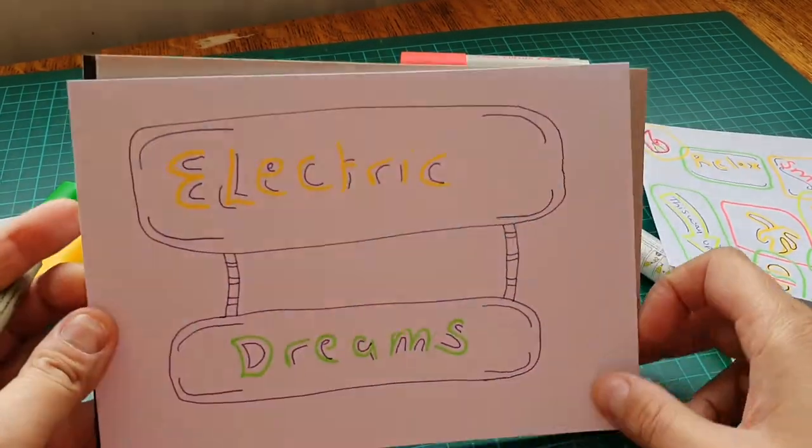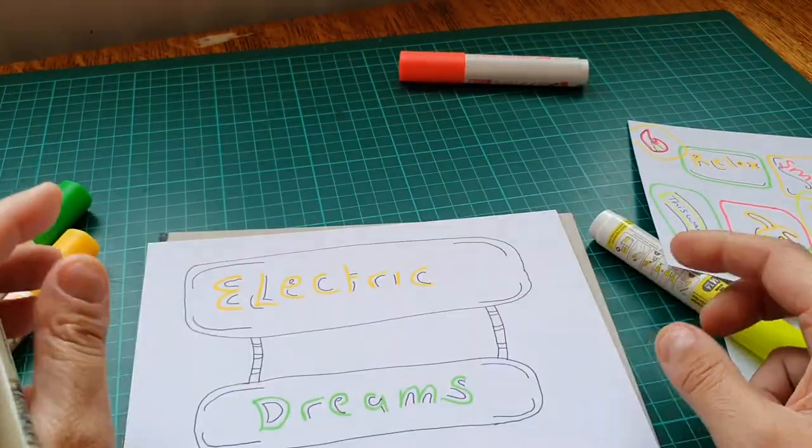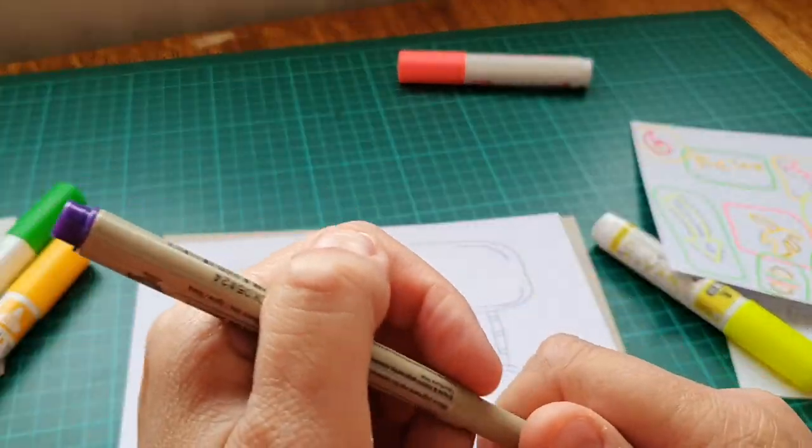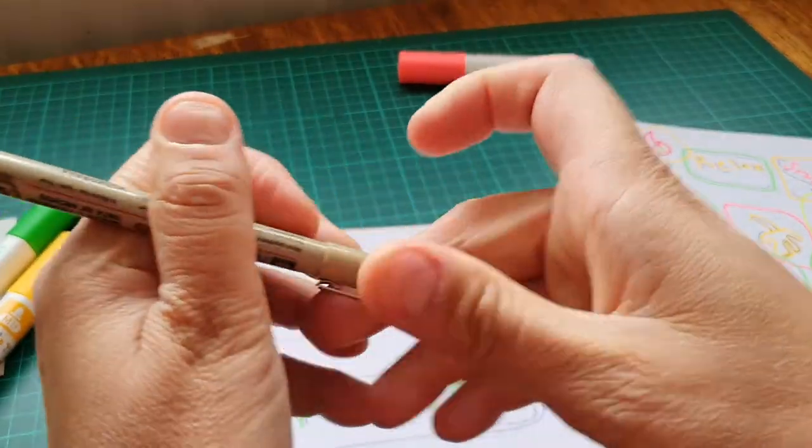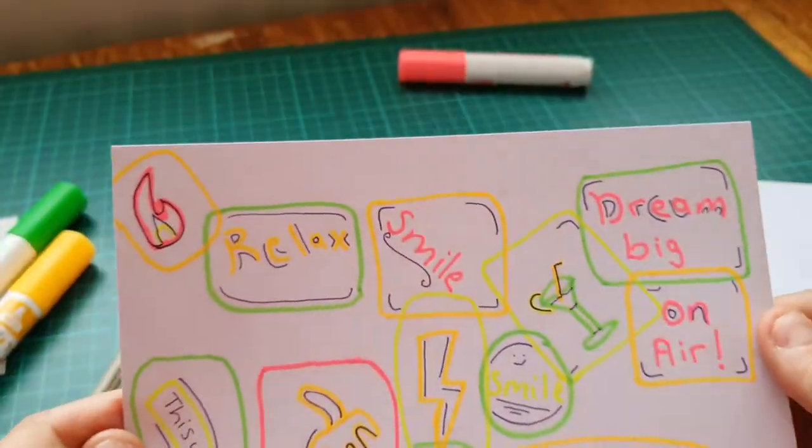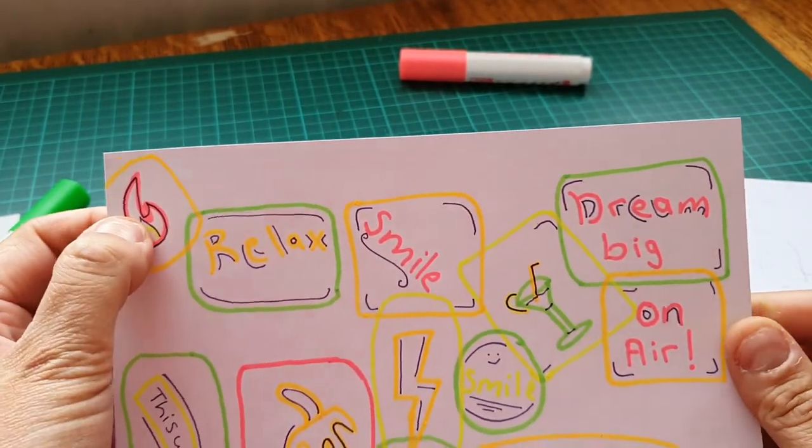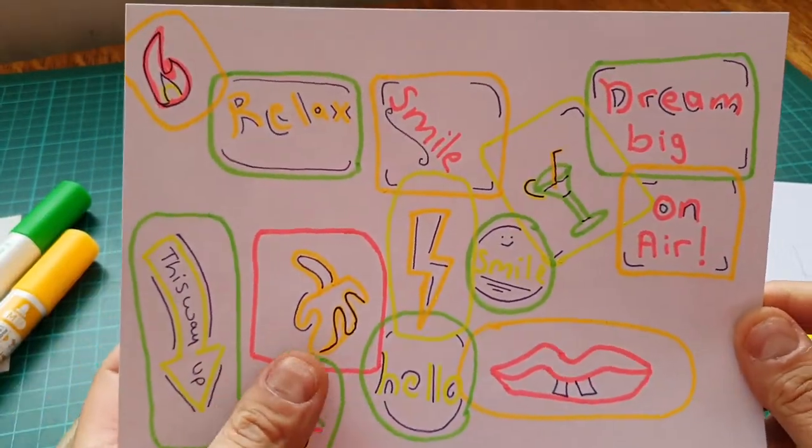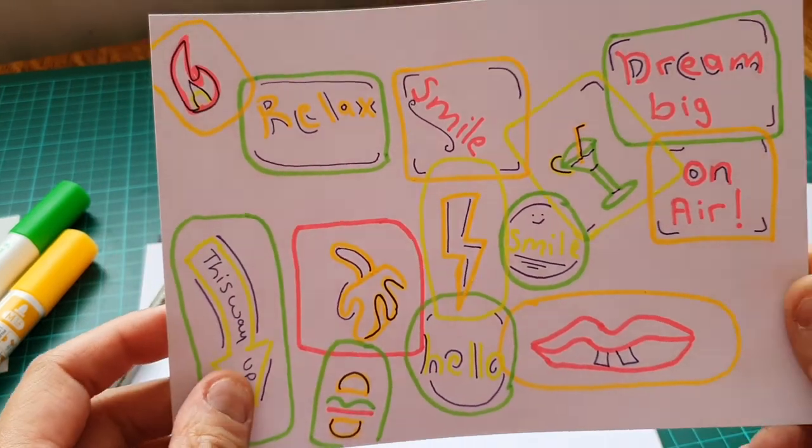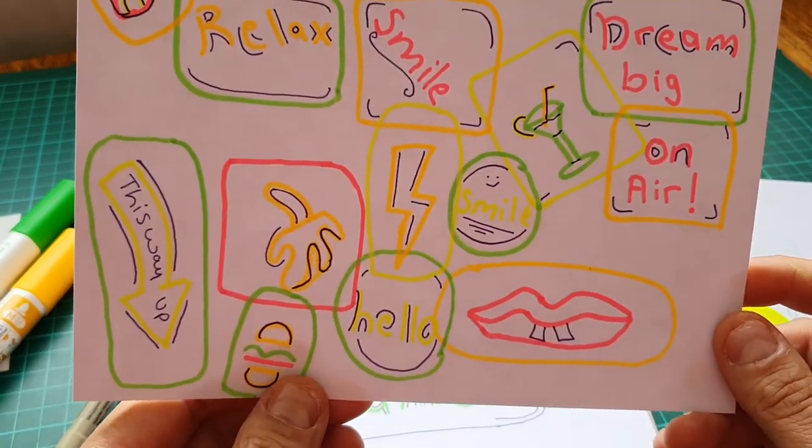There, so electric dreams - not very good, never mind. So just to explain, that's supposed to be a flame, naked flame. That's supposed to be a banana, looks nothing like it. This way up, that's supposed to be a burger.